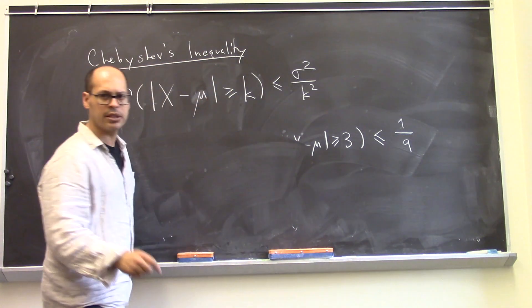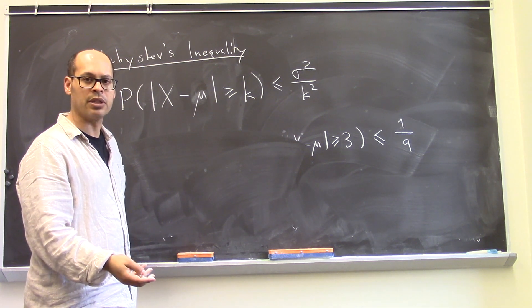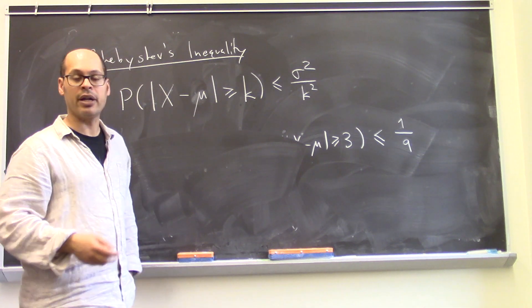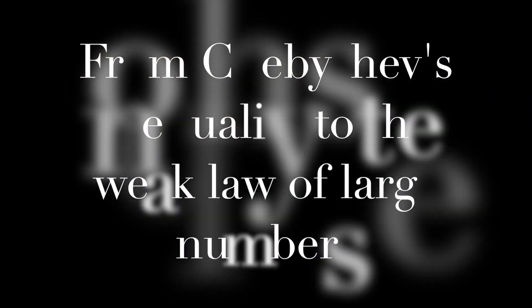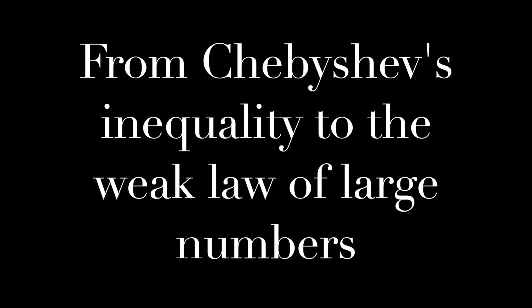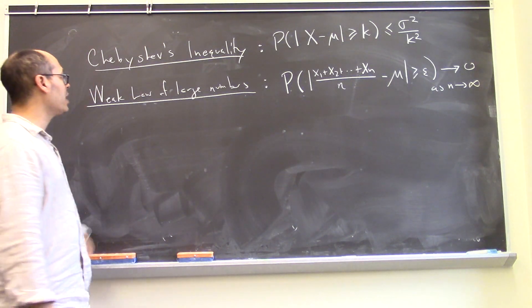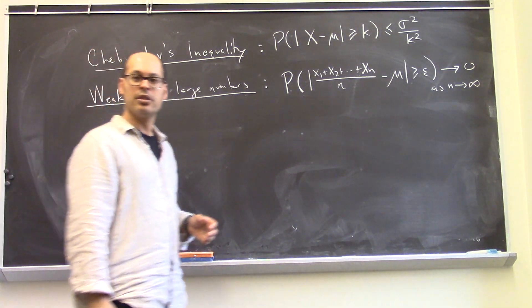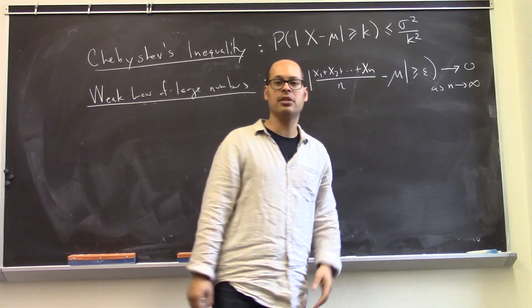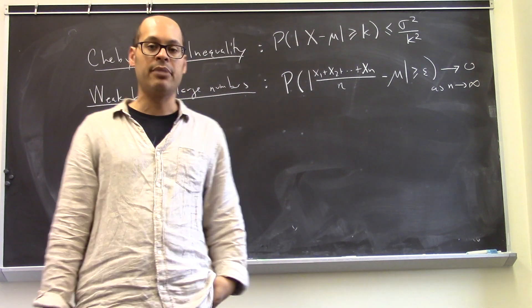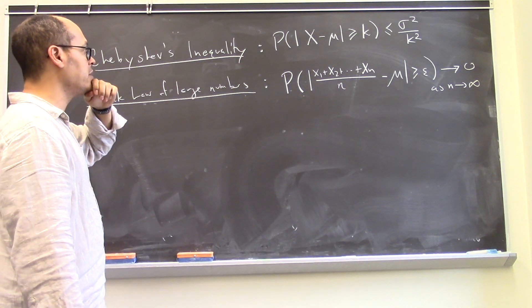Next, let's look at how we can use Chebyshev's inequality to prove the weak law of large numbers, and then we'll say a little bit about how to derive Chebyshev's inequality itself. So how do we get from Chebyshev's inequality — which gives us a bound on the probability that X differs from its mean by some number — to the weak law of large numbers?